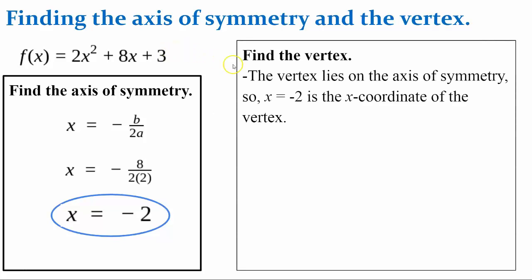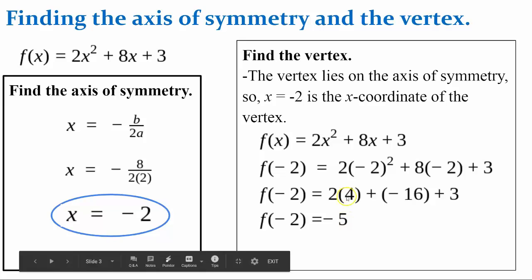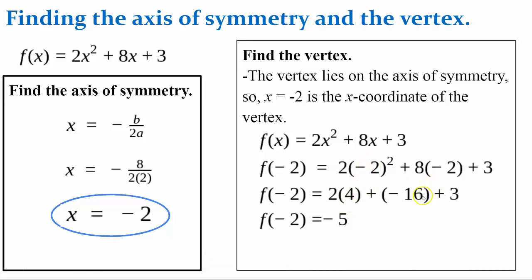We're going to use that result now to find the vertex. The vertex lies on the axis of symmetry, so the x-coordinate of the vertex is negative 2. We evaluate the function at x = negative 2: 2 times (negative 2)² plus 8 times (negative 2) plus 3. Negative 2 squared is 4, 8 times negative 2 is negative 16, then add 3. The output is negative 5. So our vertex is the ordered pair (negative 2, negative 5), and the axis of symmetry is x equals negative 2.